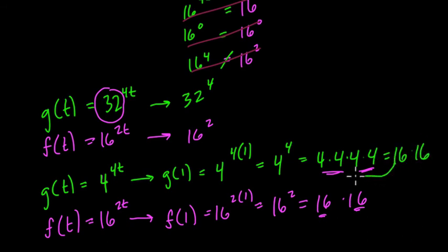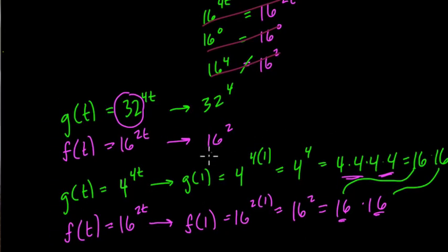Couldn't we write g(t) as 16 times 16 as well to see that these things are equal? And there we have it. These are exactly the same. We could have written 16 times 16 as 4 times 4 times 4 times 4 to also match it. Either way, we know these things are now going to be equal. And you can plug in other values of t.